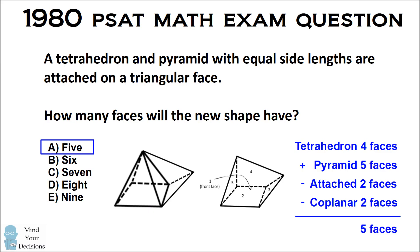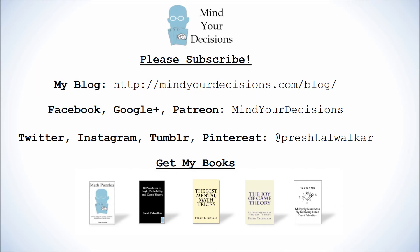When 17-year-old Daniel Lohan presented this to the test makers, they eventually admitted their mistake, and they said that both 5 and 7 would be correct answers. But the correct answer is 5.